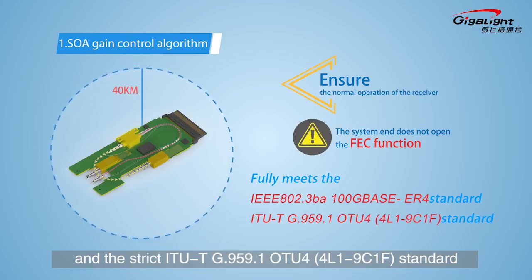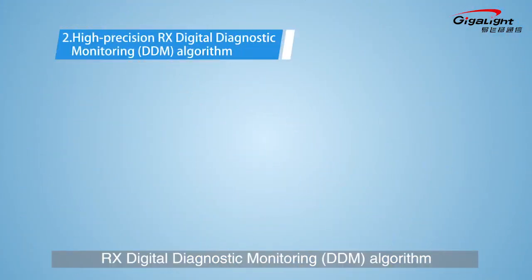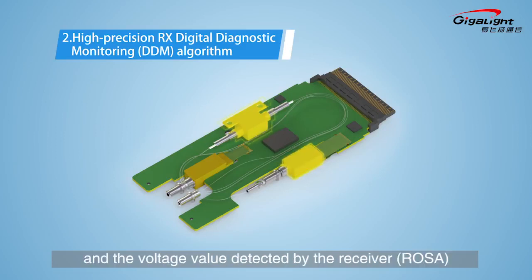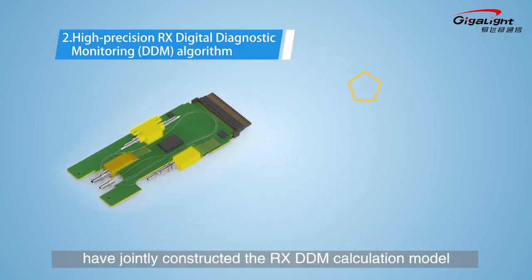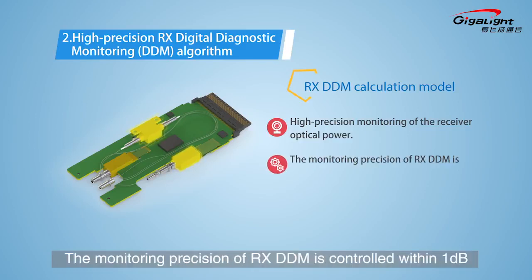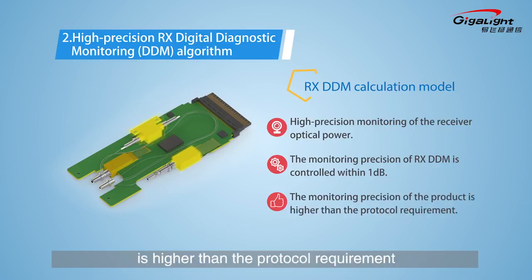The second algorithm is the high-precision RX digital diagnostic monitoring algorithm. The working current value of the SOA and the voltage value detected by the receiver jointly construct the RX DDM calculation model, which realizes high-precision monitoring of receiver optical power. The monitoring precision of RX DDM is controlled within 1 dB, so the monitoring precision of the product exceeds the product requirement.